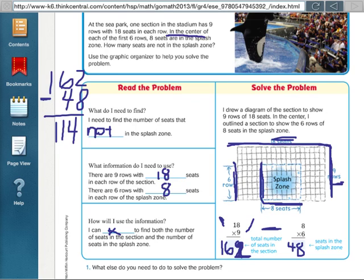If I were to count all these blocks outside the splash zone, it should add up to 114 seats that are not in the splash zone. That's pretty much it for this lesson.